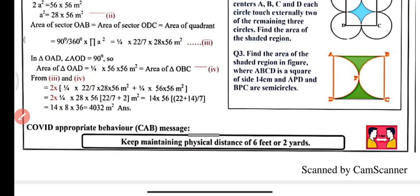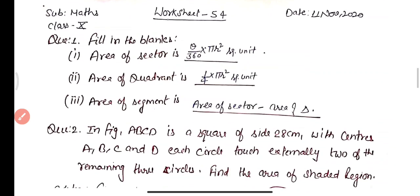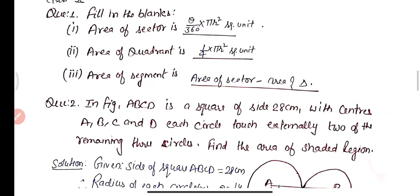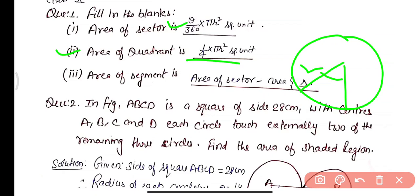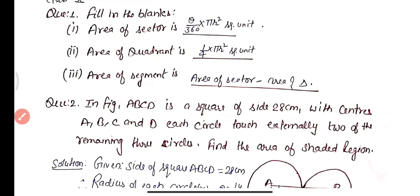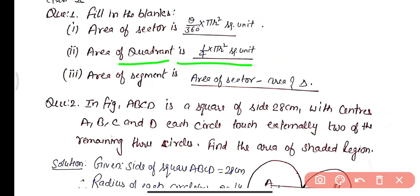Now three practice questions. Question 1 (fill in the blanks): Area of a sector = (θ/360) × π r²; area of a quadrant = (1/4) π r². A quadrant is the fourth part of a circle. Area of a segment = area of sector − area of triangle.